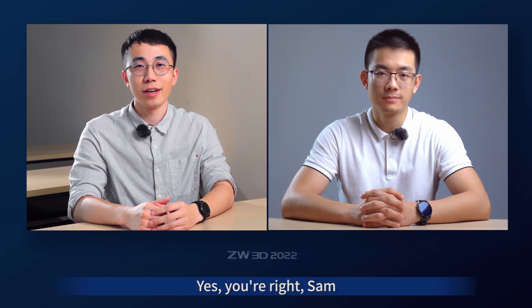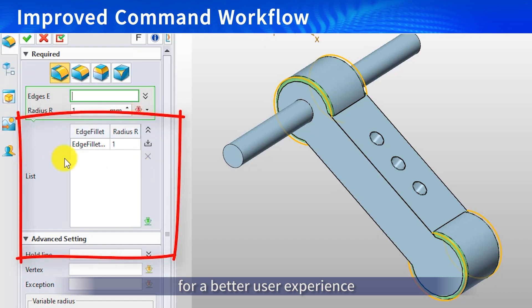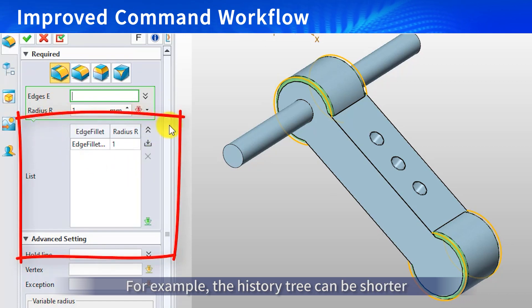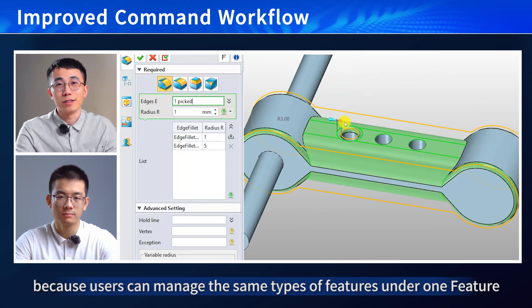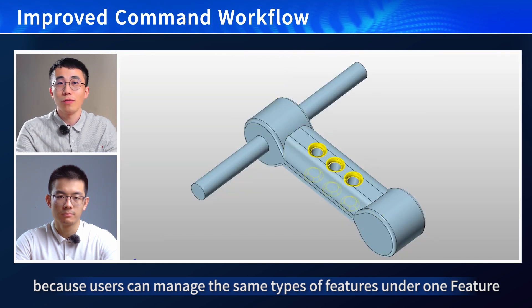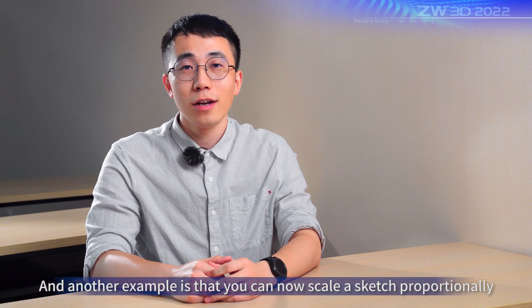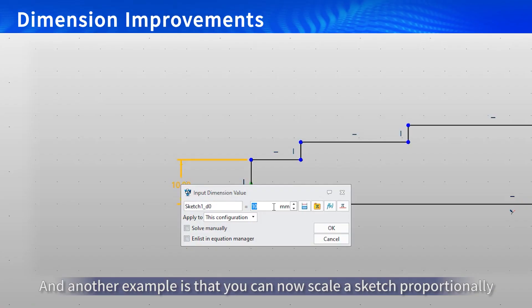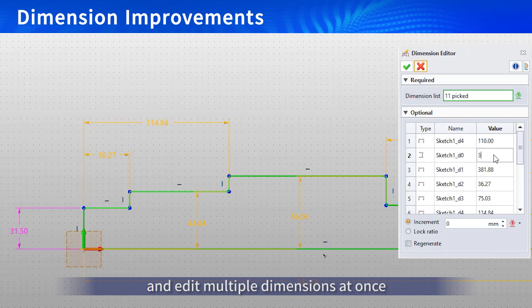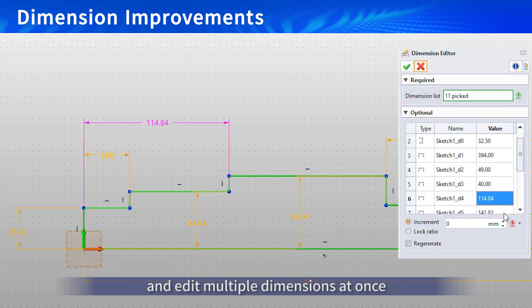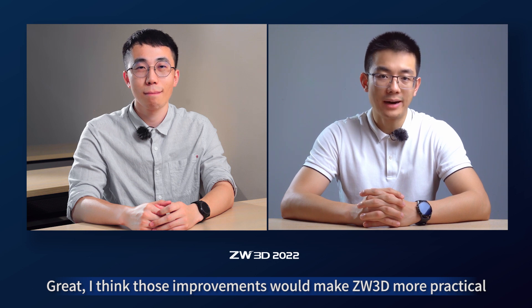Yes, you are right Sam. Also in this version, a lot of modeling commands are optimized for better user experience. For example, the history tree can be shorter because users can manage the same type of features under one feature. And another example is that you can scale a sketch proportionally and add it to multiple dimensions. I think those improvements would make Zyber3D more practical.